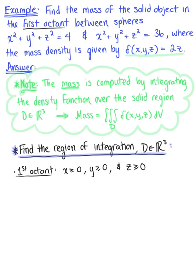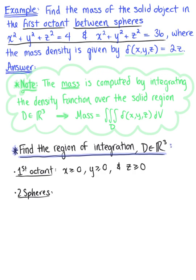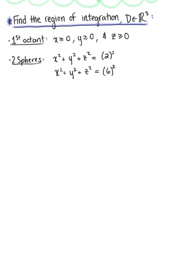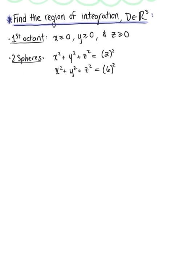We can also see that this solid region is between two spheres — the difference of two spheres. Our first sphere is x² + y² + z² = 4, or 2², and our second sphere is x² + y² + z² = 36, or 6². Being bounded between two spheres is a good indicator that spherical coordinates will be the most convenient method to integrate. To see the spherical bounds on region D, let's sketch a graph.